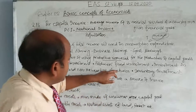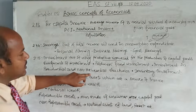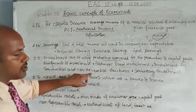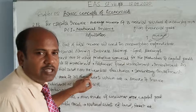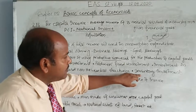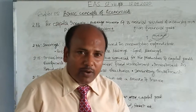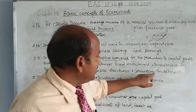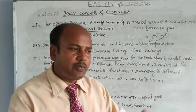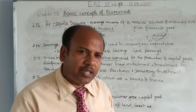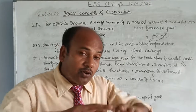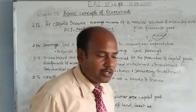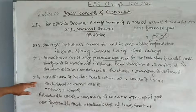Another component is investment in residential and non-residential structures. Residential structures are for our own use or residence, while non-residential structures include offices, warehouses, godowns, and so on. There is also inventory investment — sometimes we produce goods but instead of selling them, we stock them. Even semi-finished goods that are not yet completed are part of inventory investment. The total of all this is called inventory investment.